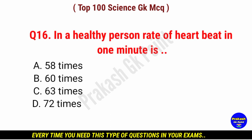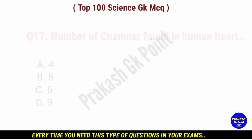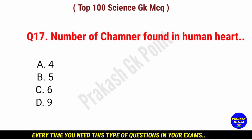In a healthy person, rate of heartbeat in one minute is dash. Answer: option D, 72 times.